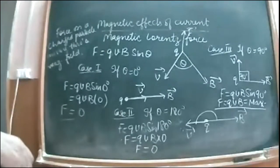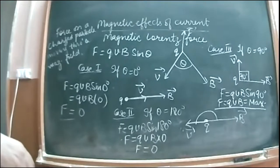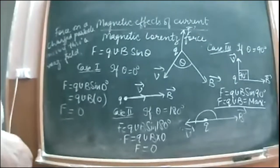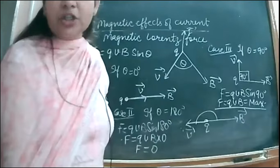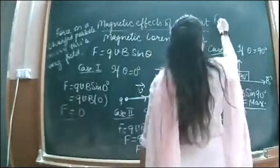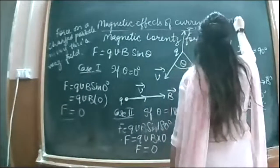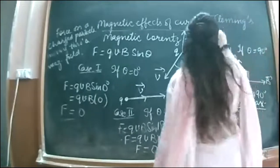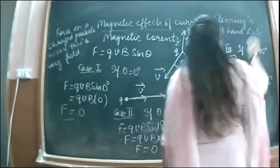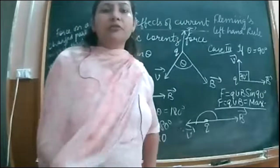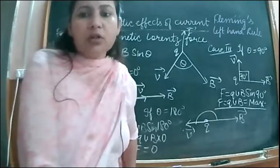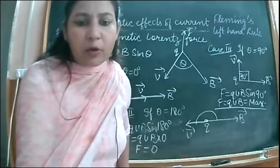This is magnetic Lorentz force. The rule that gives us the direction of this force is called Fleming's left hand rule.